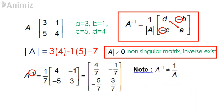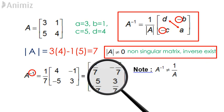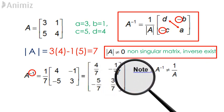4, negative 1, negative 5, 3, gives us the inverse matrix of A to be 4 over 7, negative 1 over 7, negative 5 over 7, 3 over 7.